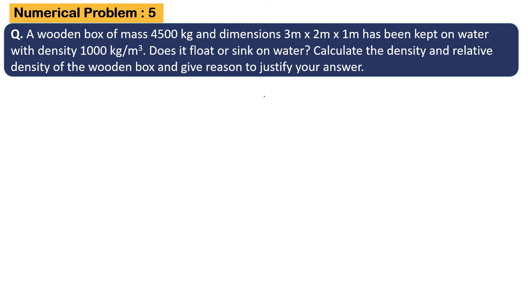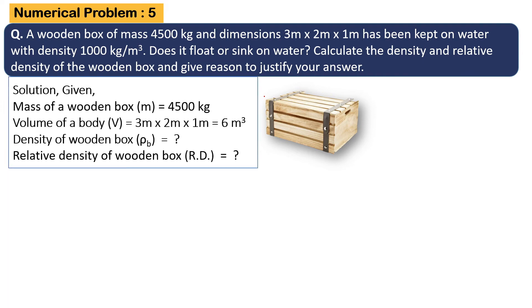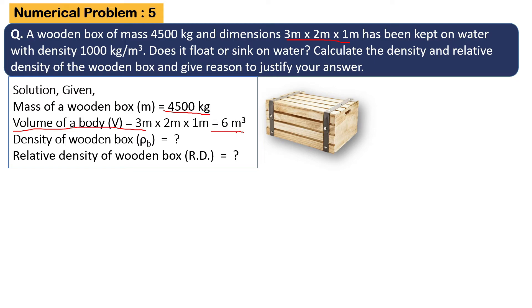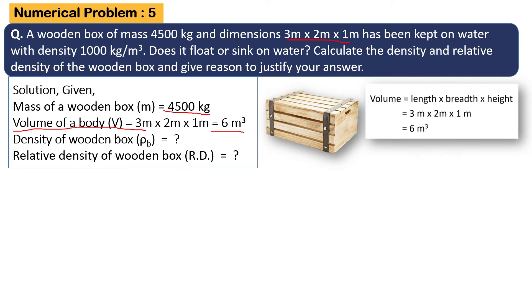Numerical Problem 5: A wooden box of mass 4,500 kg and dimensions 3 meter by 2 meter by 1 meter has been kept on water with density 1,000 kg per meter cube. Does it float or sink on water? Calculate the density and relative density of the wooden box and give a reason to justify your answer. First, find the volume: length into breadth into height equals 3 meter into 2 meter into 1 meter equals 6 meter cube.